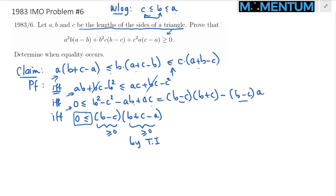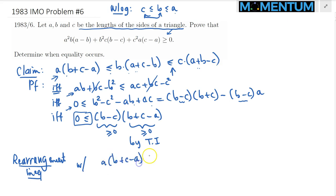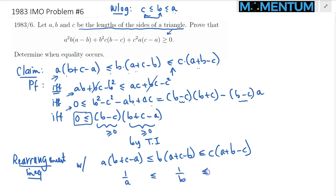We have proven our claim. Now we apply the rearrangement inequality with the following two sequences. The first is the increasing sequence: A(B+C−A) ≤ B(A+C−B) ≤ C(A+B−C). The second: since A ≥ B ≥ C, we have 1/A ≤ 1/B ≤ 1/C.